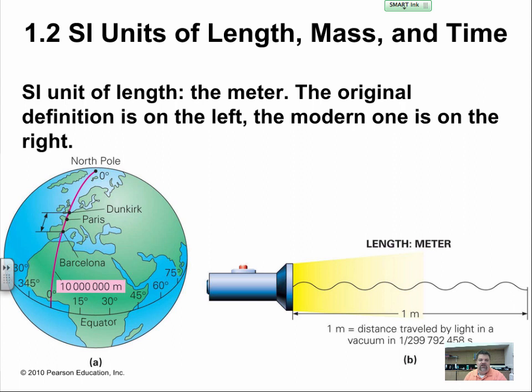The SI unit of length is a meter. The original definition was based on the equator and the North Pole. The distance from the North Pole to the equator was about 10 million meters.